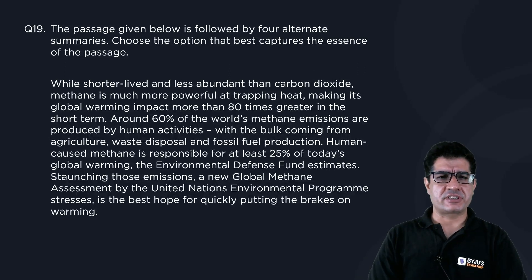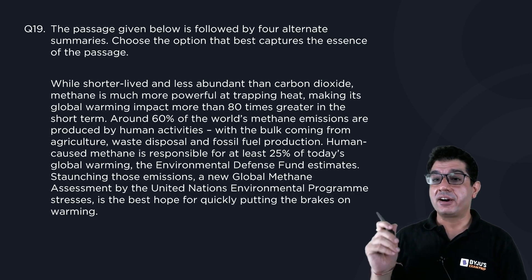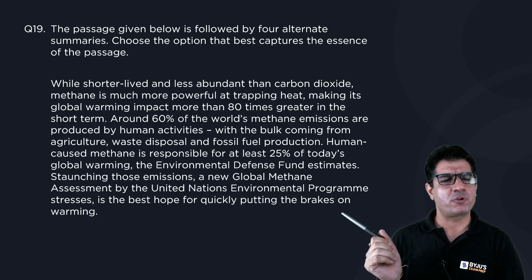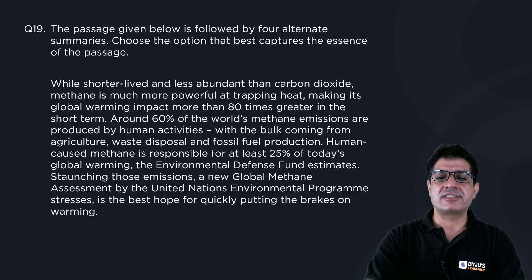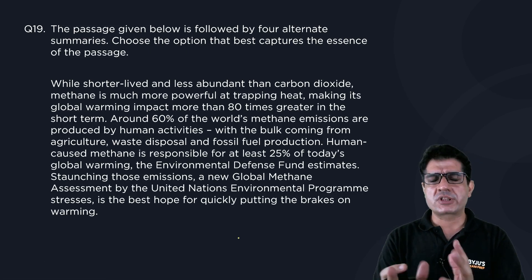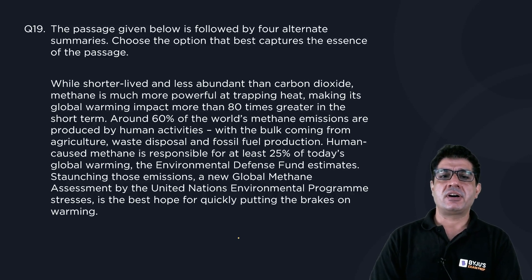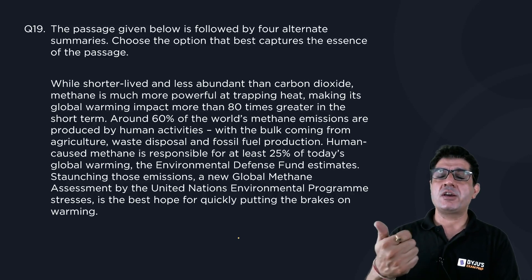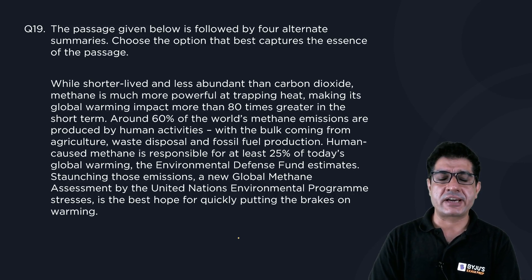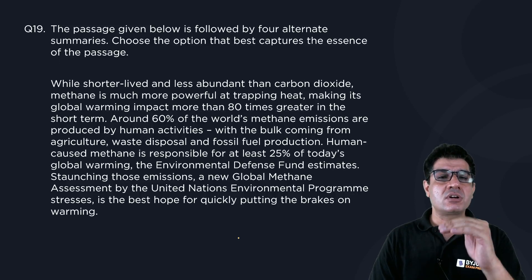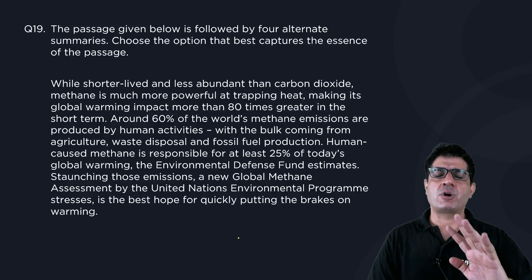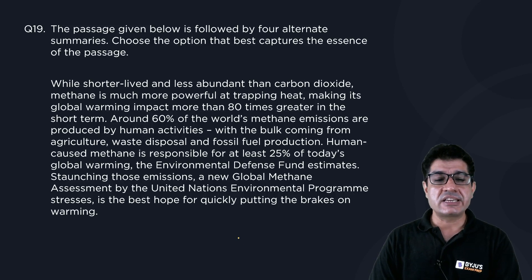Question number 19 gives us a paragraph and asks us to pick the best summary for it. There are two to three key ideas present. Number one is that methane is way more powerful at global warming as compared to carbon dioxide. Most of it is produced by human activities. We need to curb or reduce those activities if we want to reduce global warming. These are the three key ideas in question number 19.